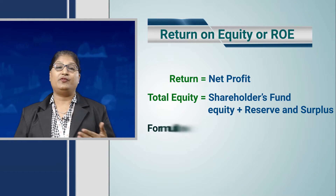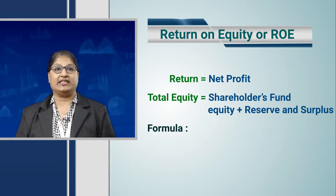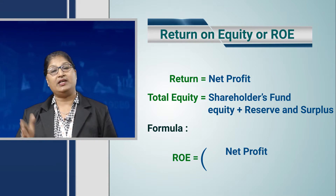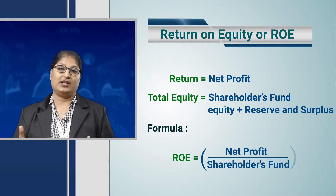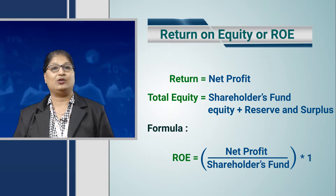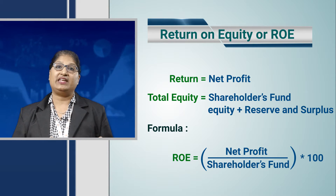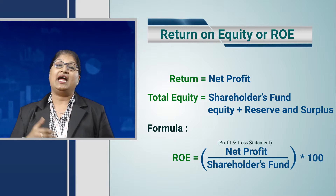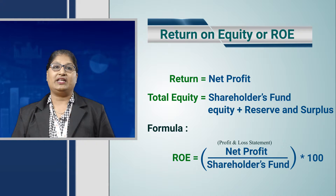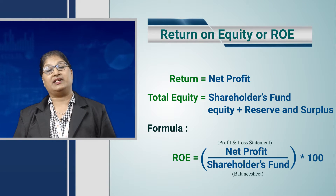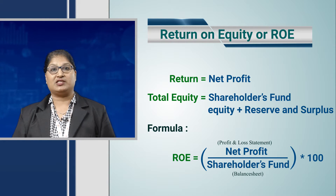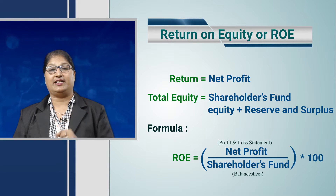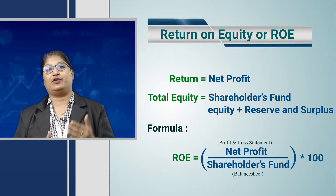Therefore, the formula for ROE is: Return on Equity = Net Profit divided by Total Equity, multiplied by 100. Net profit can be ascertained from the profit and loss statement, and total equity from the balance sheet. Wherever possible, we will always take the consolidated numbers.